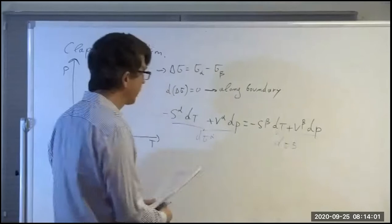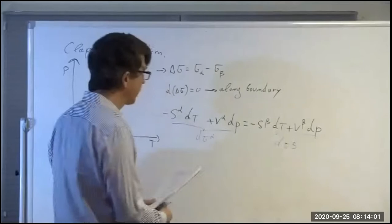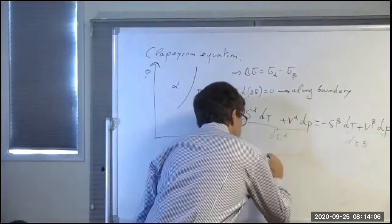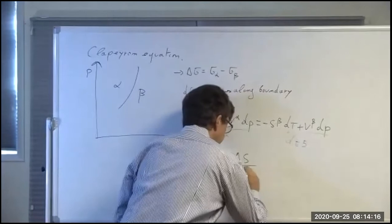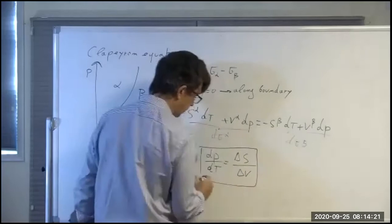Grouping the entropy terms and volume terms, we get the differential equation along the boundary: dP/dT is equal to ΔS over ΔV, where delta indicates the property difference between the two phases.